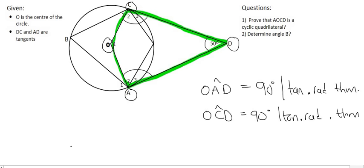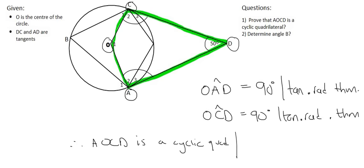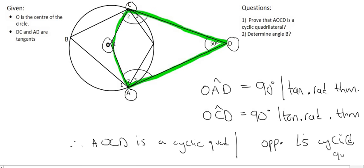So we can say therefore AOCD is a cyclic quad. And the reason for that will be that the opposite angles of a cyclic quad.